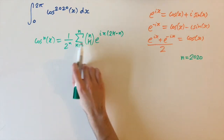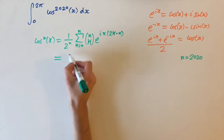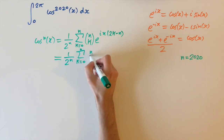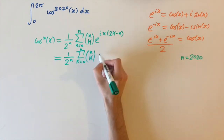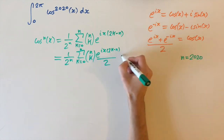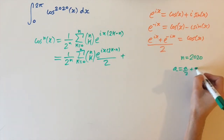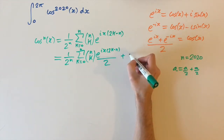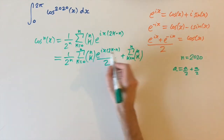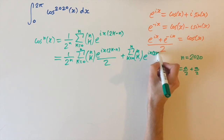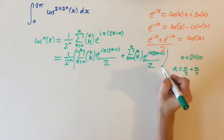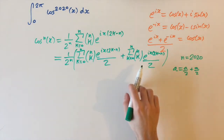The trick is to split this sum into two separate sums. We write this as one over two to the power of n times the sum from k equals zero up to n of n choose k times e to the ix times (2k minus n) over 2, plus another identical sum. This is just writing a as a/2 plus a/2 — nothing special yet, but it helps shortly.